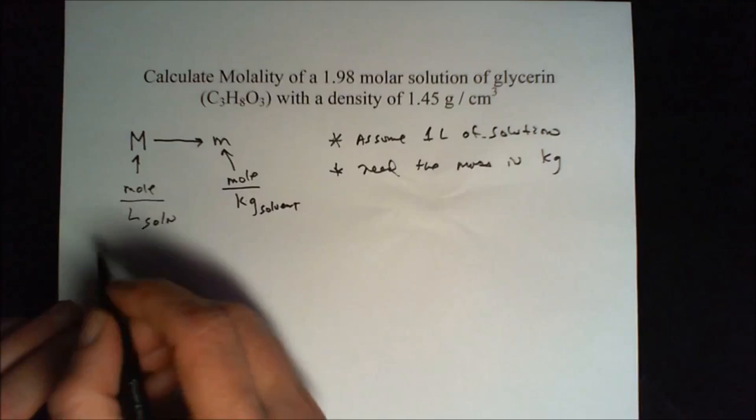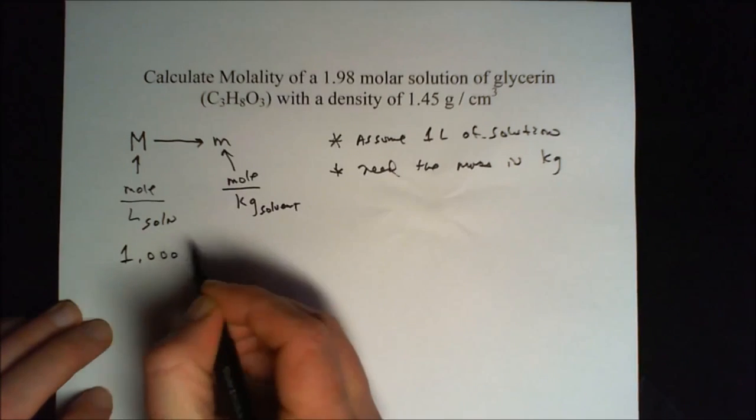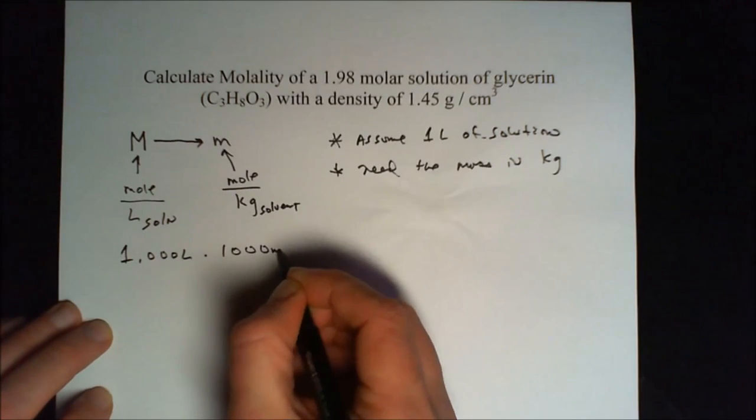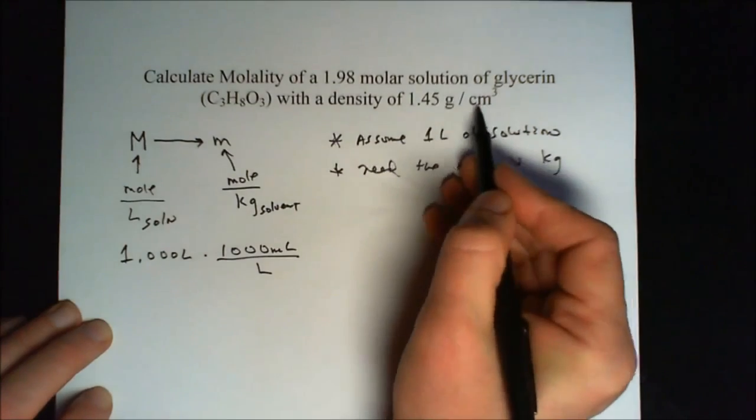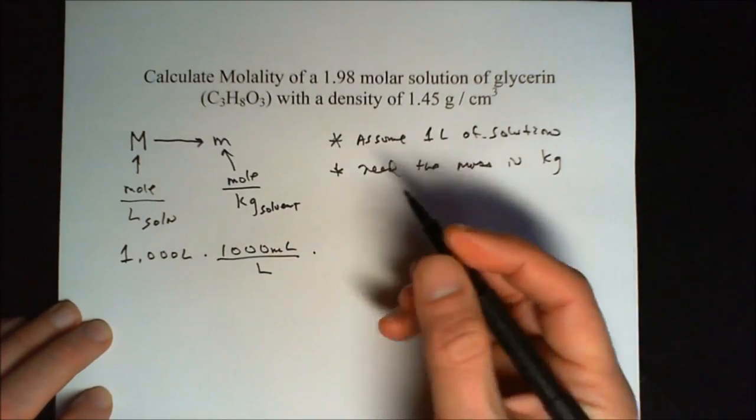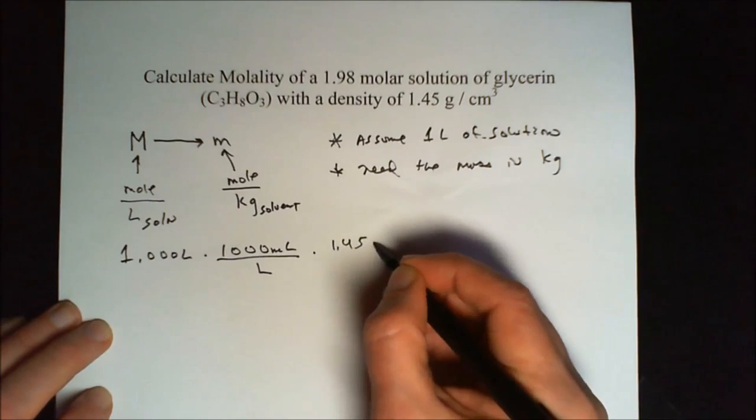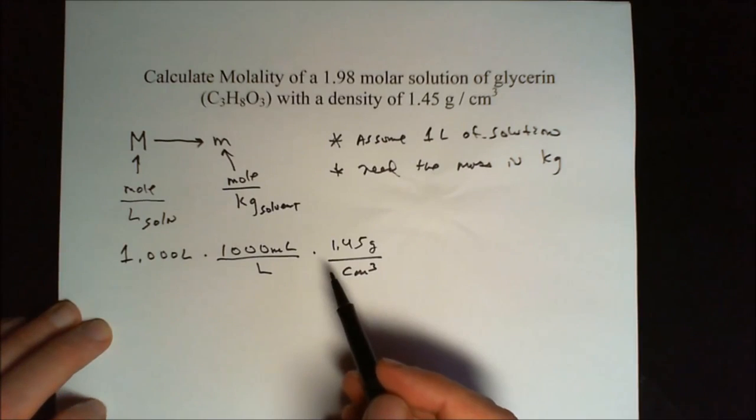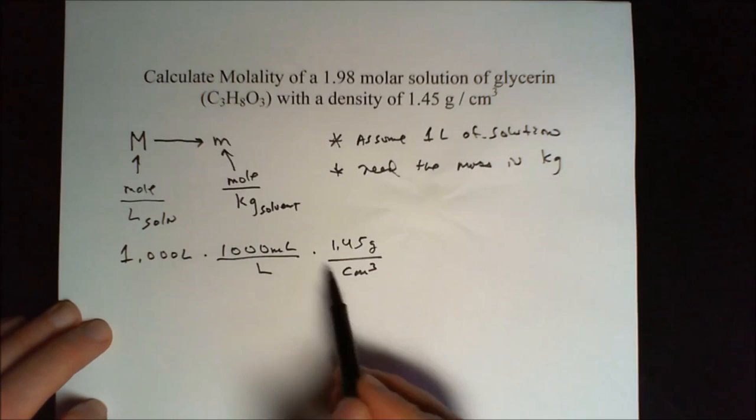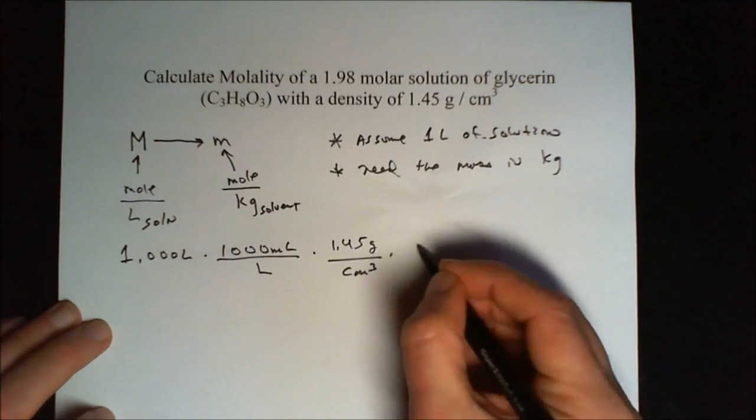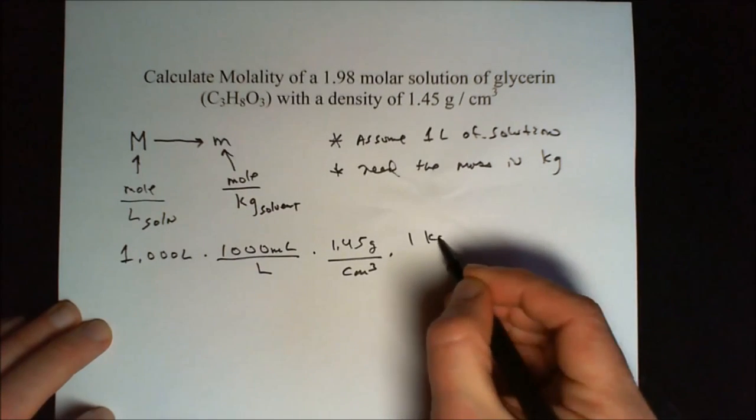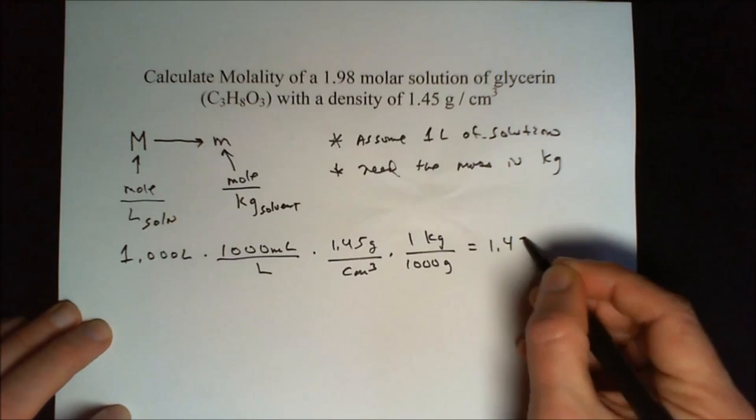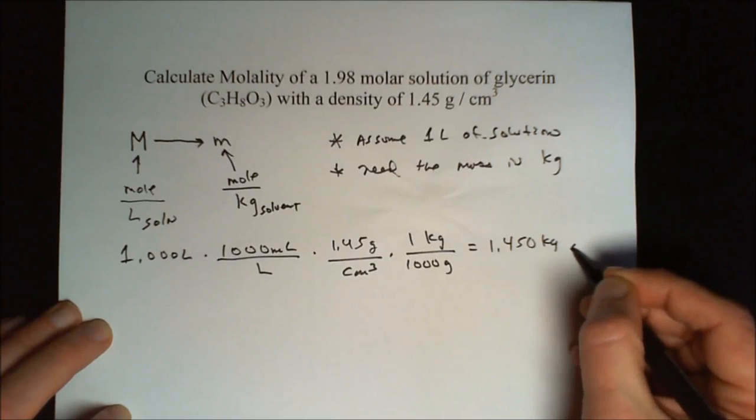And to do that, well, we assume that we have one liter, so 1.00 liters exactly. And there are 1,000 milliliters per liter, so that we can use our grams per cubic centimeter. And there's 1.45 grams per cubic centimeter, that's the density that was given to us. Recall that milliliters and cubic centimeters are the same thing. And finally, we need to get kilograms, and 1 kilogram is 1,000 grams. And that gives us 1.450 kilograms of the solution.